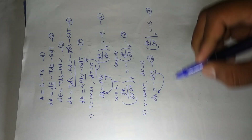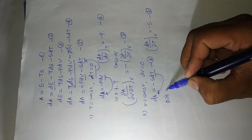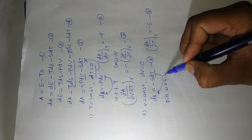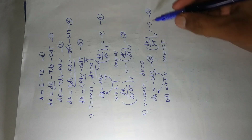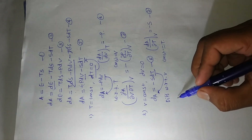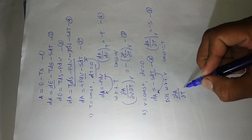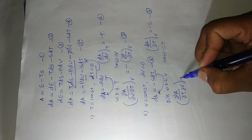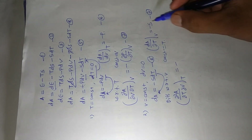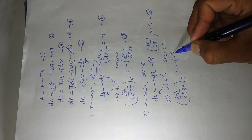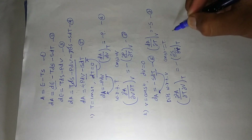Now equation number 9 is differentiated with respect to volume at constant temperature. Then equation 9 becomes: the double differentiation of A with respect to temperature and then volume at constant temperature is equal to minus the differentiation of S with respect to volume at constant temperature. This is equation number 10.